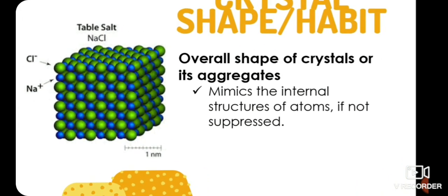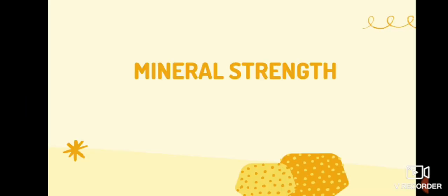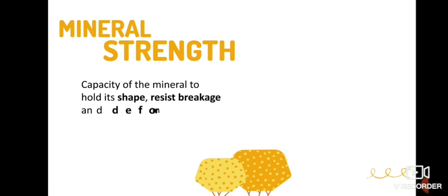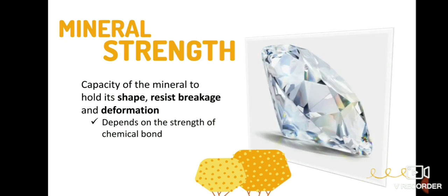Now we have the third property, which is the mineral strength, which includes hardness, cleavage, and fracture. The strength of a mineral is dependent on the strength of the chemical bonds that a mineral contains. Mineral strength refers to the mineral's capacity to hold its shape, resist breakage, and deformation under the presence of stress. Diamond is regarded as the strongest and hardest mineral of all. But what is hardness first?